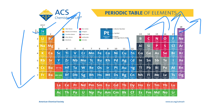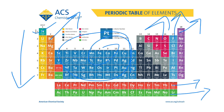The center elements are called transition elements because they are present between metals and non-metals, and also because of their special properties. The last two periods are specially named as the lanthanide and actinide series.